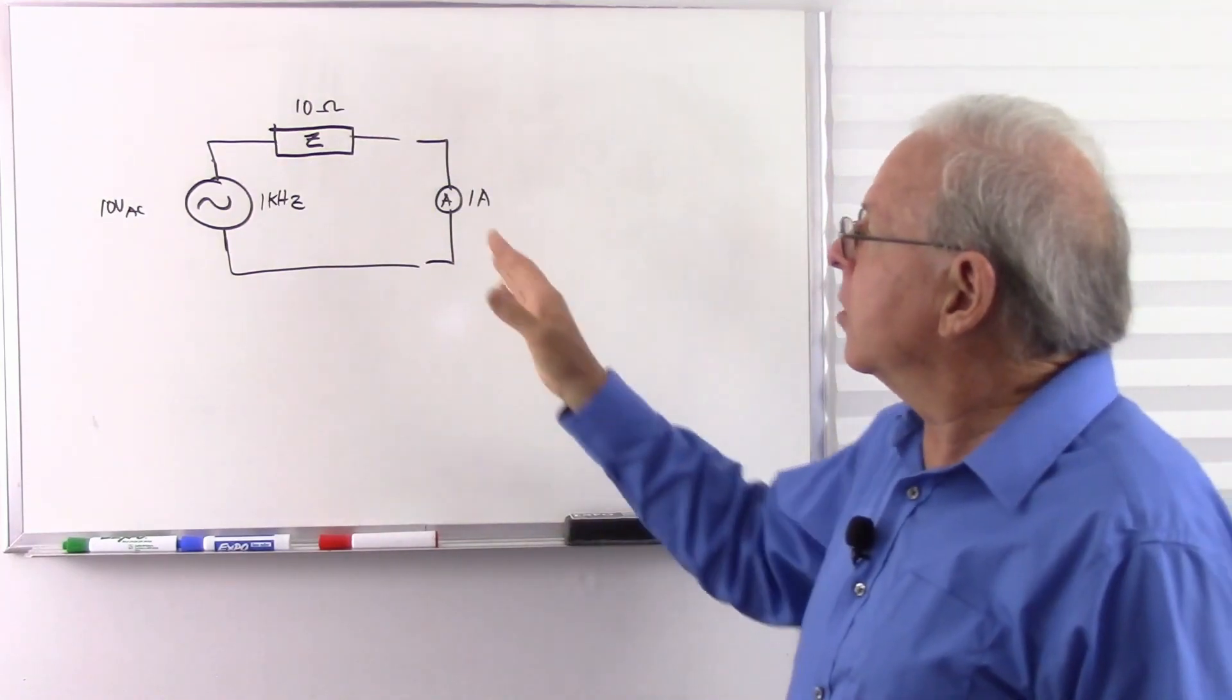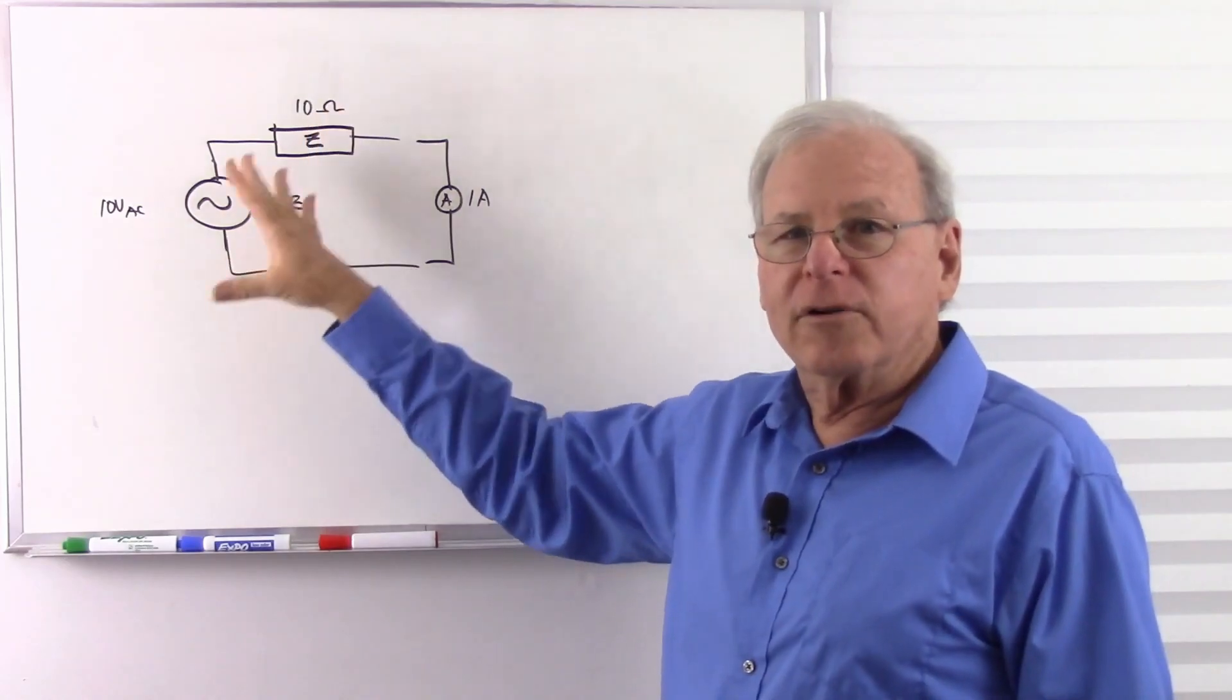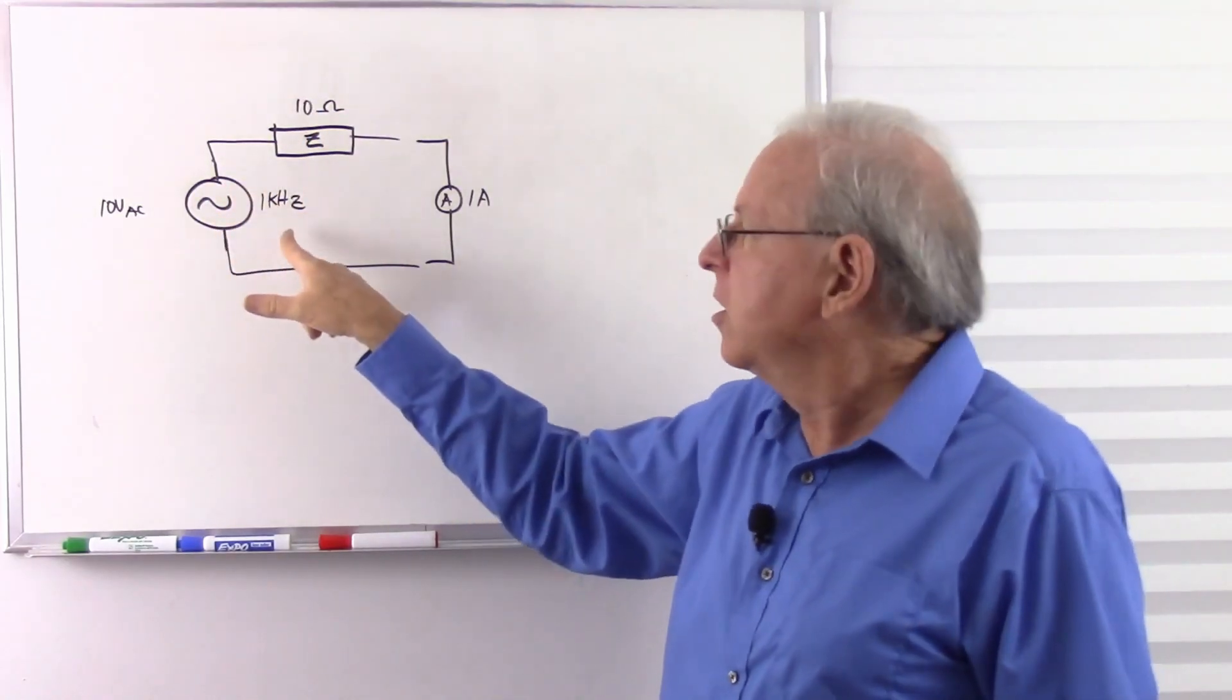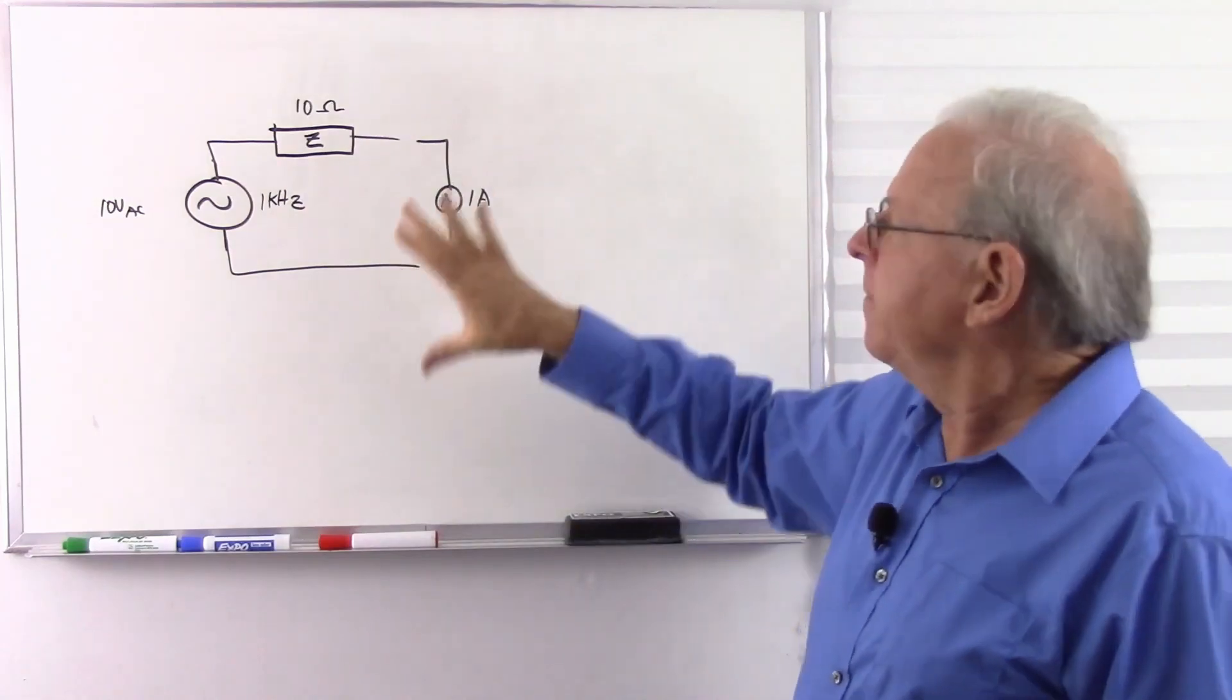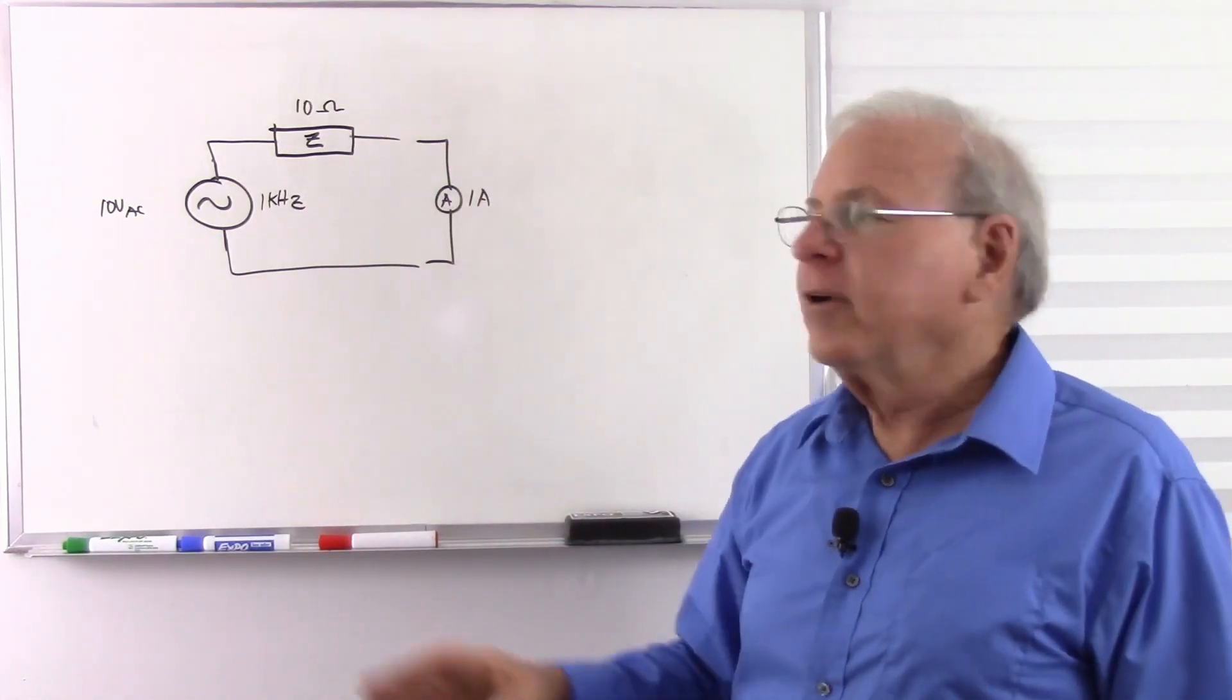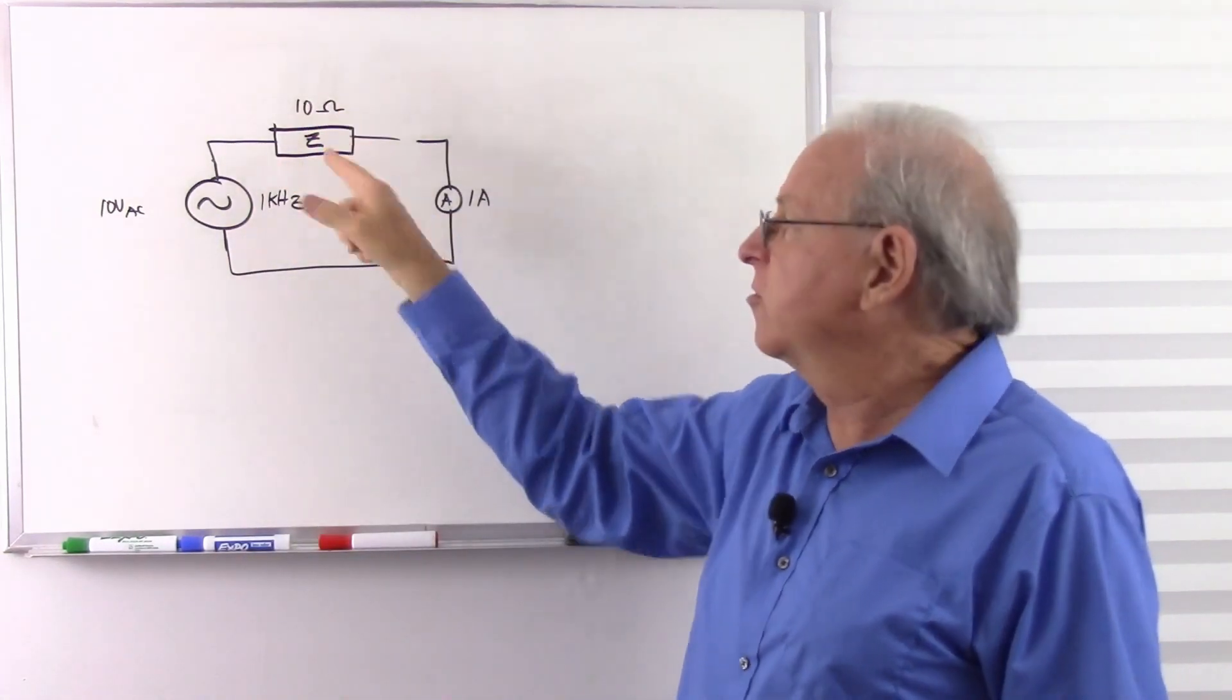So the answer is yes, it does work with inductors and capacitors. It just means that we're working with alternating current, which means we're going to have an alternating current source. A frequency is going to be involved, which means that changes with frequency. But we test it the same way with an AC voltmeter, then an AC current meter, and come up with the same result. But now that's impedance rather than just simply resistance.